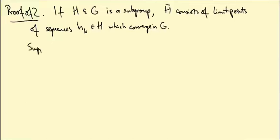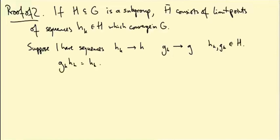So suppose I have sequences hₖ converging to h and gₖ converging to g with hₖ and gₖ both in this subgroup H. What I know is that gₖhₖ equals hₖgₖ for all k because H is abelian. I'm trying to prove that the topological closure of an abelian subgroup is abelian.